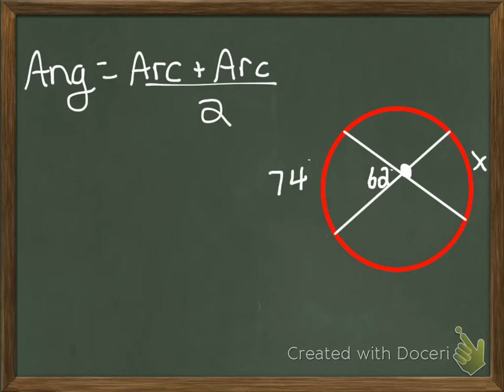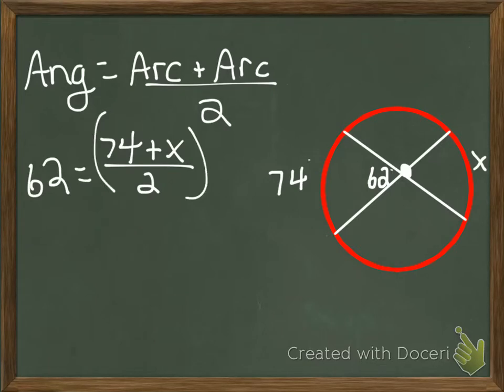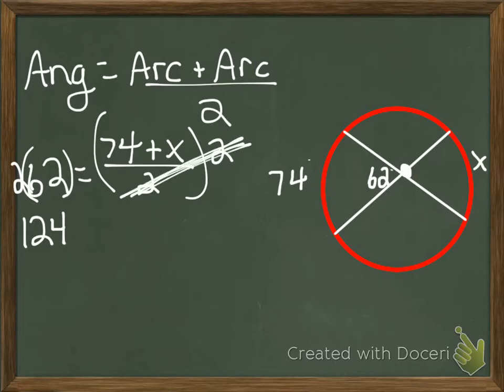So 62 goes in for my angle. One arc is 74. The other arc is my x and I'm going to divide by 2. Once I'm here it's simply a matter of solving for x. So I have to get this 2 out from underneath the fraction first. So multiply both sides times 2. That gives me 124. Those have cancelled out. Equals 74 plus x.